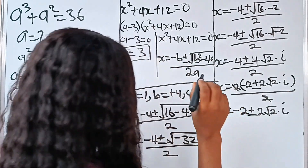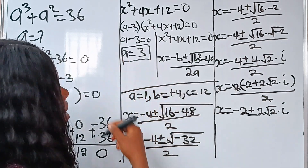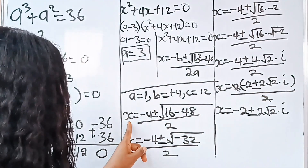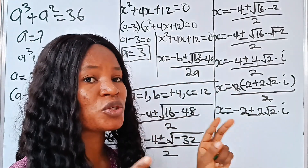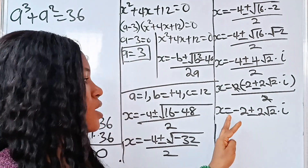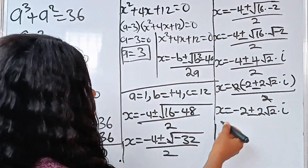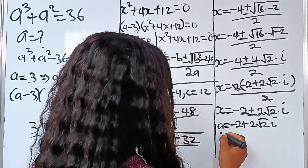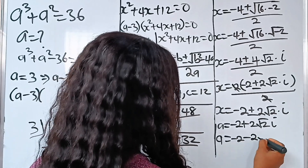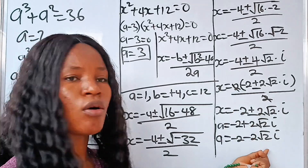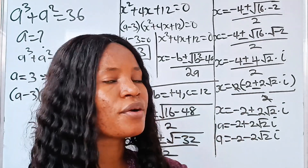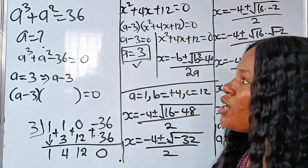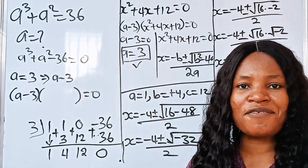So these are the values of x. Note that in this particular equation we are actually looking for the value of a, so our variable is a. That means a equals minus 2 plus 2 root 2 i, or a equals minus 2 minus 2 root 2 i. These particular values are complex. The only real root of this equation is a equals 3. Thank you so much for watching, and have a lovely day. Bye.